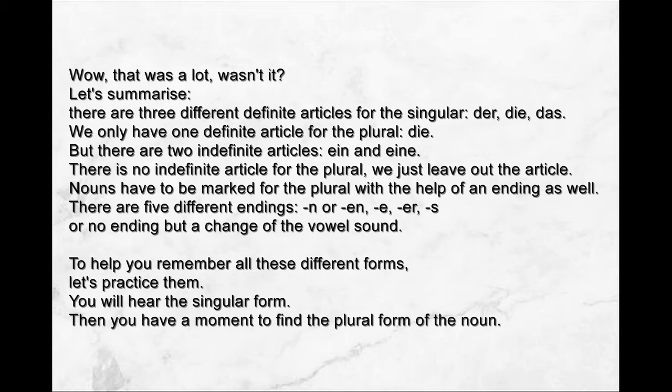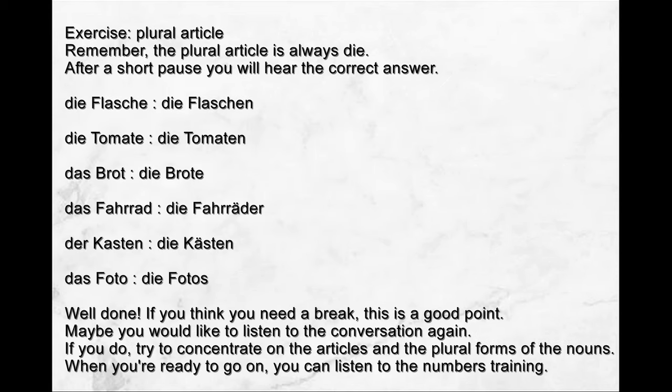To help you remember all these different forms, let's practice them. You will hear the singular form, then you have a moment to find the plural form. Remember, the plural article is always 'die'. After a short pause, you will hear the correct answer. 'Die Flasche' → 'Die Flaschen'. 'Die Tomate' → 'Die Tomaten'. 'Das Brot' → 'Die Brote'. 'Das Fahrrad' → 'Die Fahrräder'. 'Der Kasten' → 'Die Kästen'. 'Das Foto' → 'Die Fotos'.